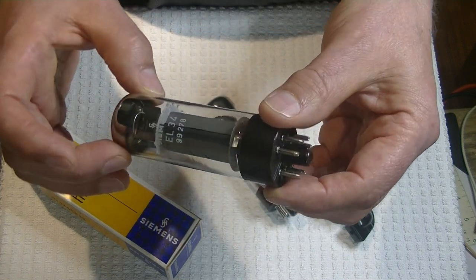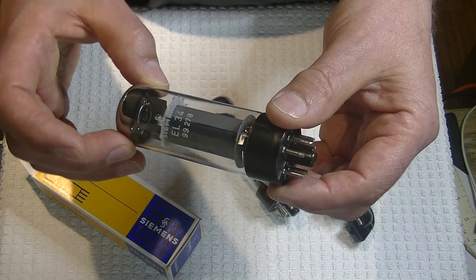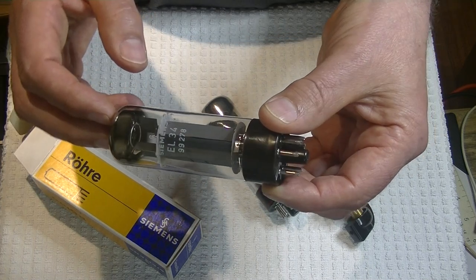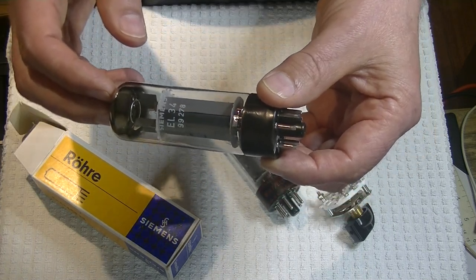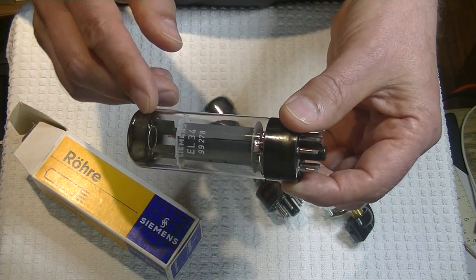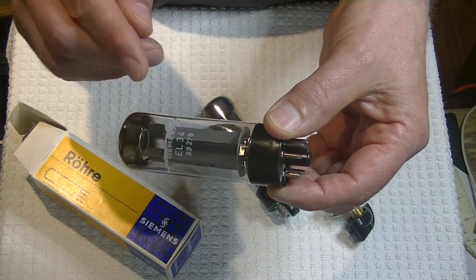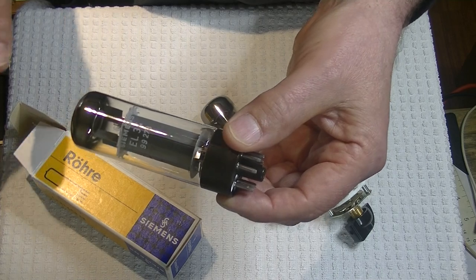But the chrome dome really is the big indicator as to the condition of the tube. Sure we need the testing numbers, but an EL34 in this shape from a good manufacturer like Mullard almost certainly will test good. This is the single large halo getter version and it's got a large full chrome dome.